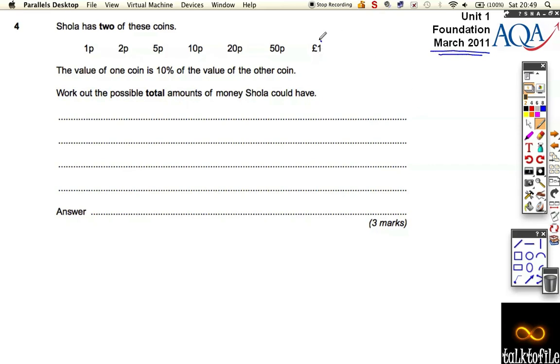So if we start with £1, if she has £1, then the other coin she must have is 10% of that, which is 10p. So that means she has £1 and 10p.